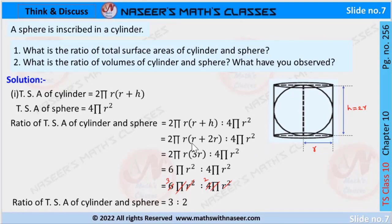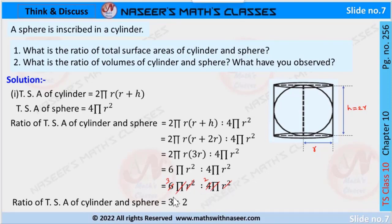Here r + 2r is written as 3r, then 2πr(3r) : 4πr². After multiplying, we can write 6πr² : 4πr². Here we can cancel π and πr² on both sides.